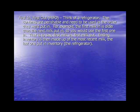The first method is FIFO, or first in, first out. Think of a refrigerator — this is my best example. The contents are perishable and need to be used in the order they are put in. For example, the first milk in is older than the next milk put in, so you would use the first one in — first milk in, first milk out. Ending inventory is then made up of the most recent milk, the last one put in inventory, in this case the refrigerator.